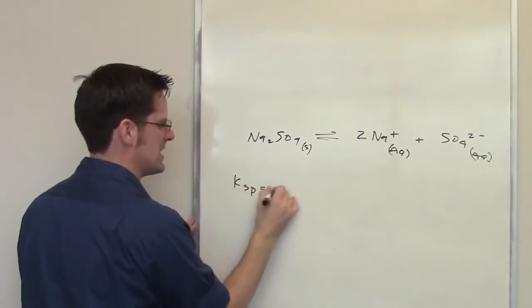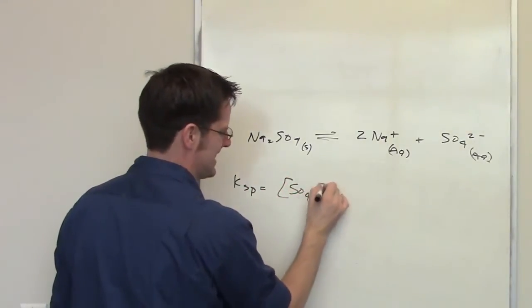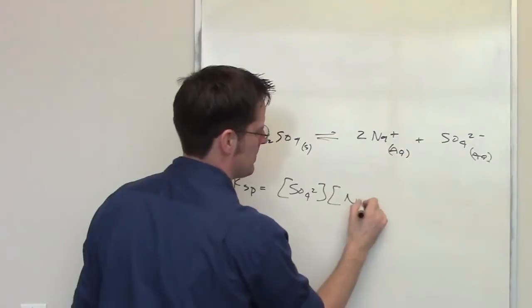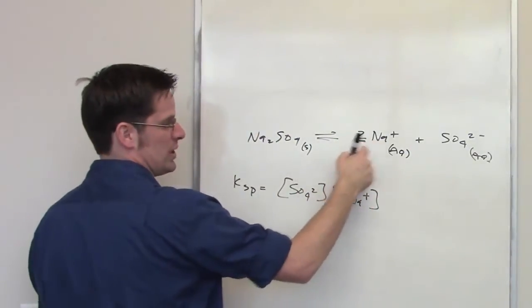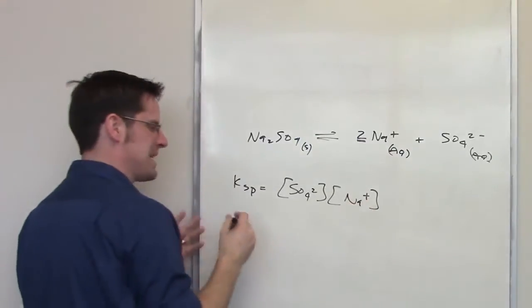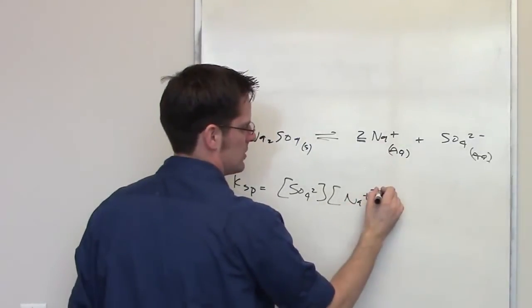The Ksp expression of this then is going to be equal to the individual concentrations of our products, these ions, multiplied by each other, where the coefficients in front of them—a two here and an implied one right there—become exponents. So I got a two up here above the sodium and a one in front of the sulfate.